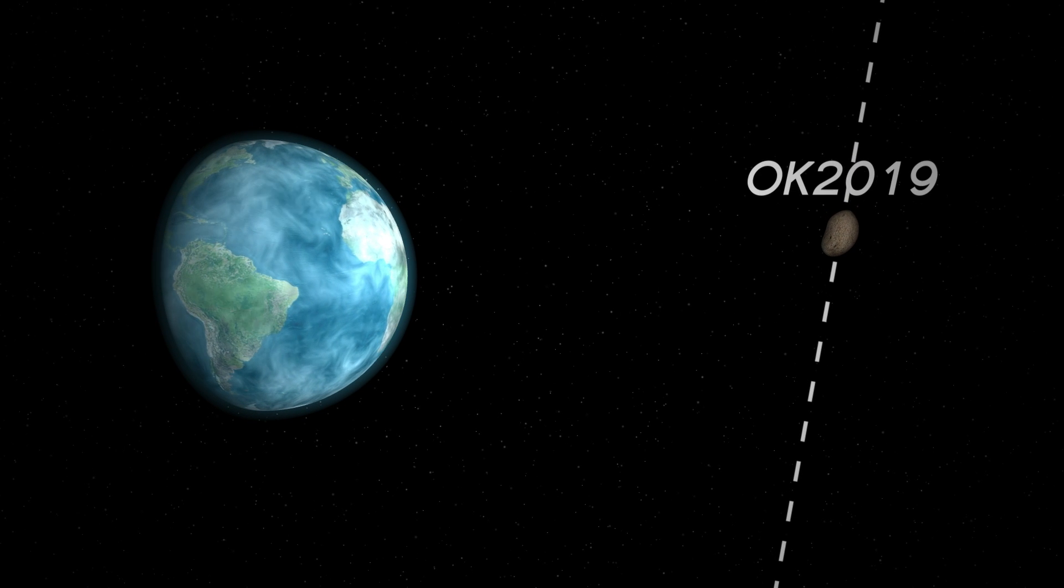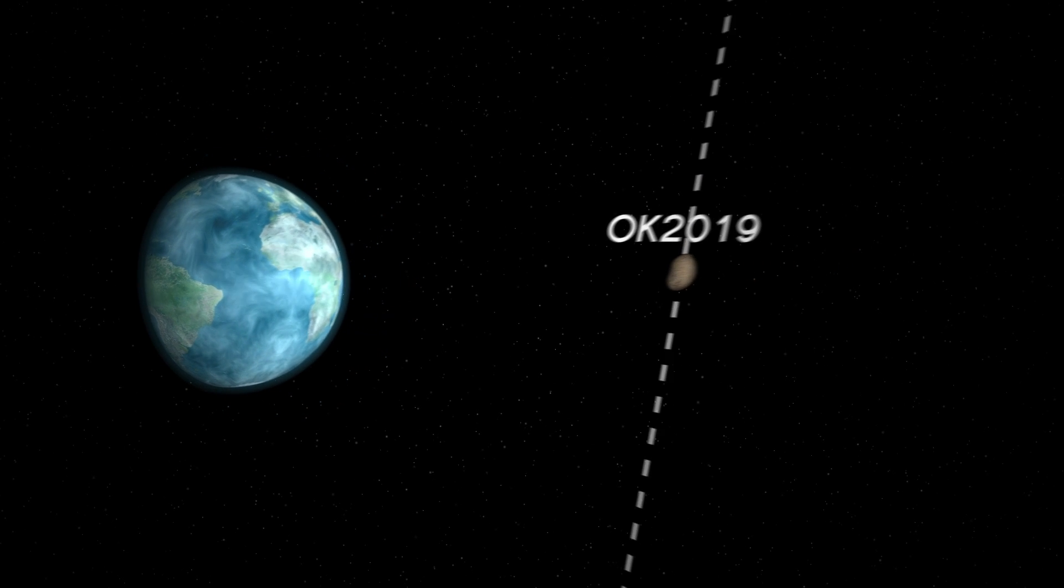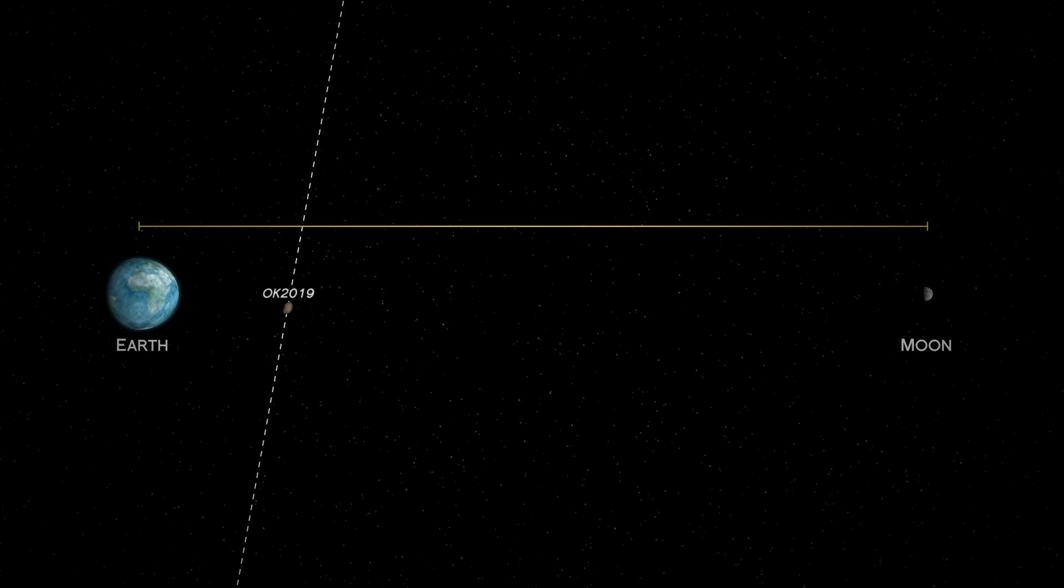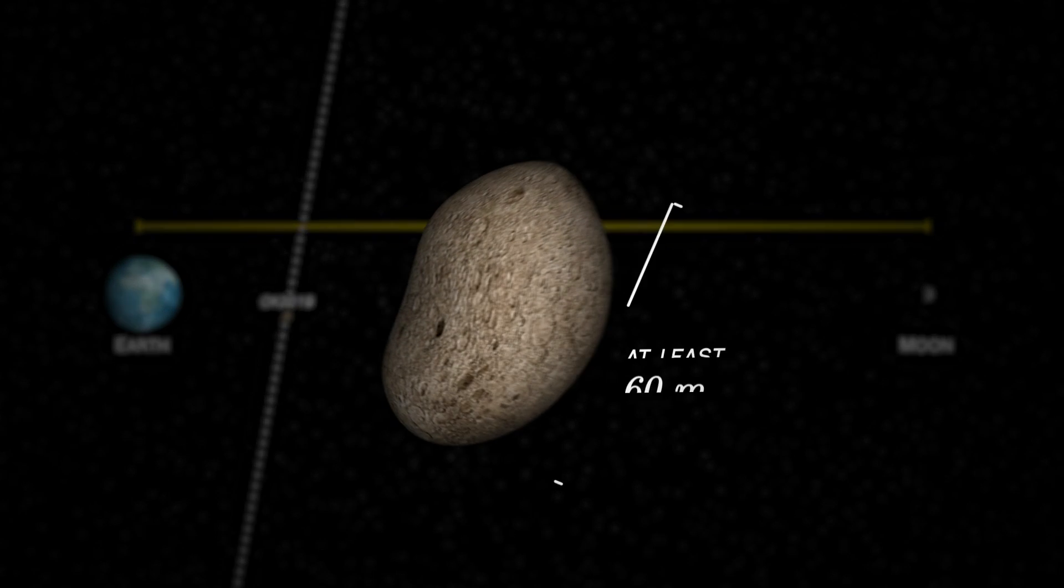The latest was 2019 OK. Detected just one day before it flew by at less than one-fifth of the moon's distance from Earth. The asteroid was at least 60 meters long.